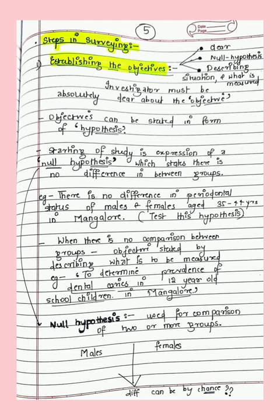The first step is to establish the objective. It should be clear and stated in the form of a hypothesis. We test it with a null hypothesis, which states there is no difference between the groups. For example: 'There is a difference in periodontal status of males and females aged 35–45 in Mangalore.' When there is no comparison between groups, the objective is stated by describing what is to be measured.